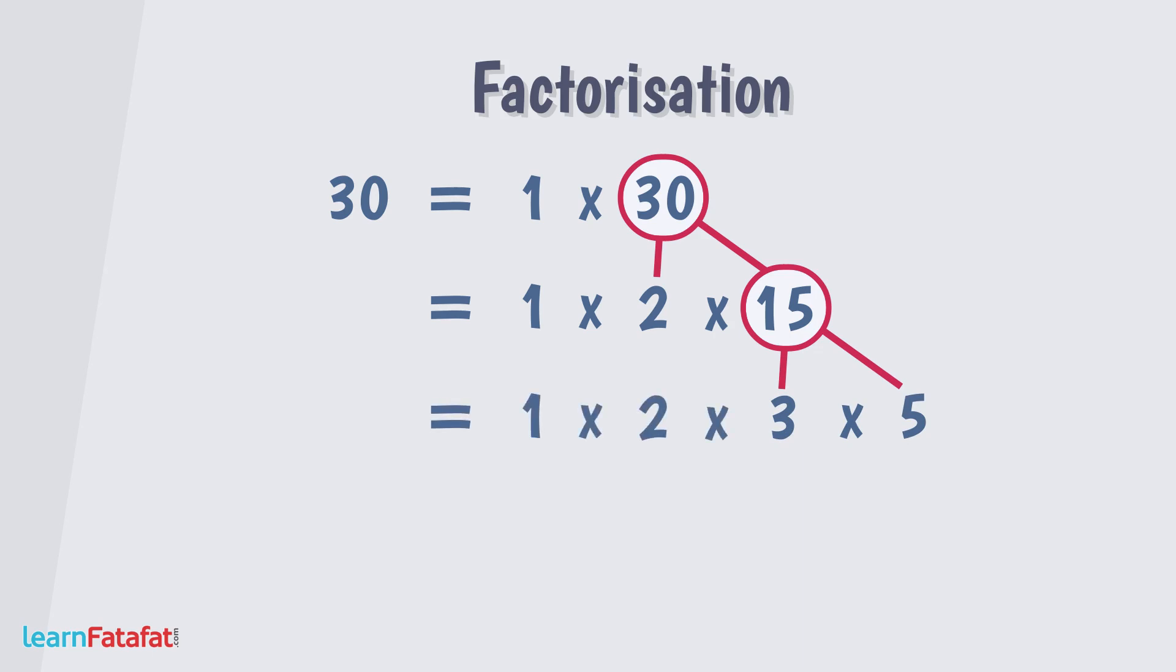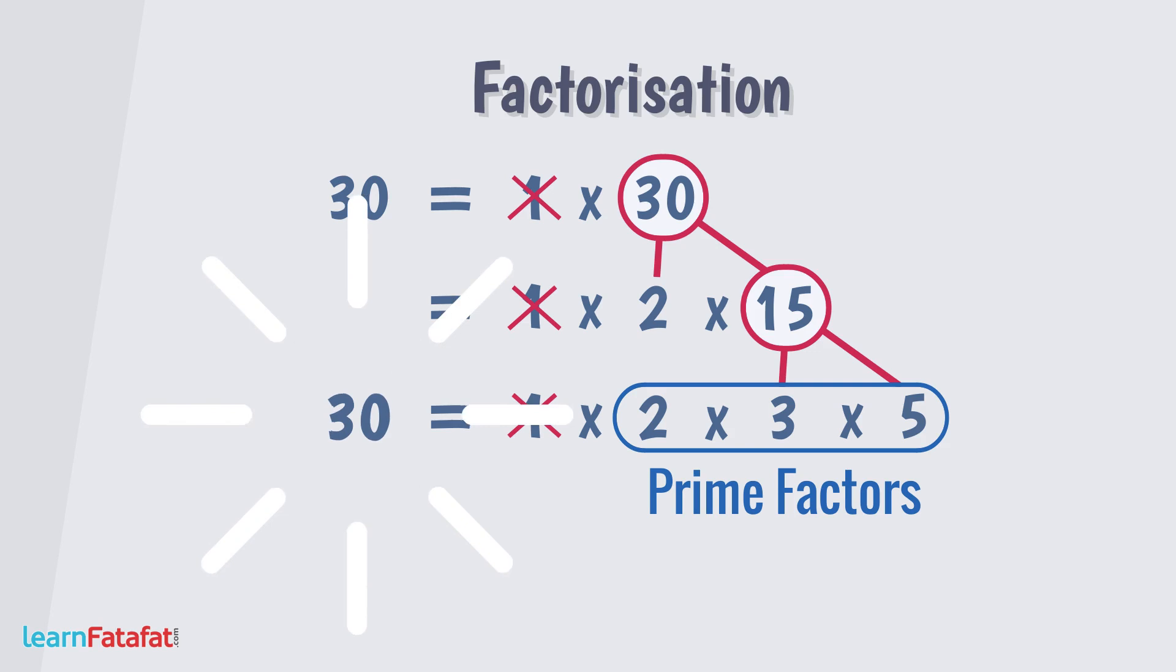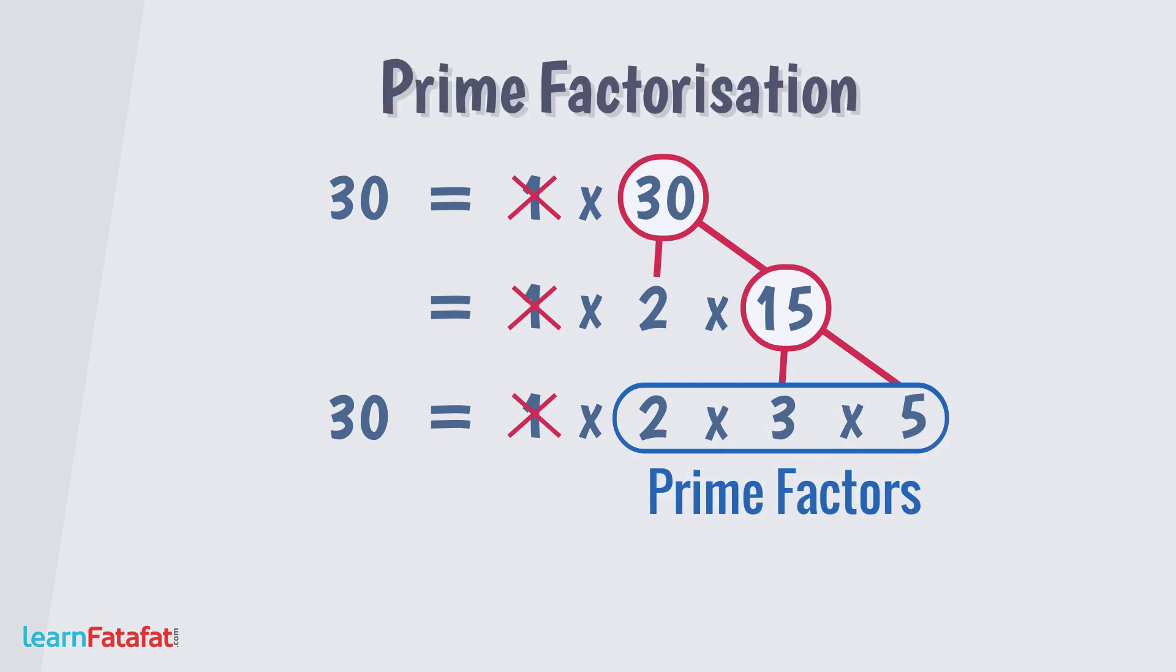After this, we cannot do further factorization as all of these numbers except 1 are prime numbers. If we remove 1 then the value will not be affected, it remains same. However, we get the product in the form of prime factors. So just now we have written 30 as the product of prime factors. Such a factorization of a number in the form of product of its prime factors is called prime factorization.